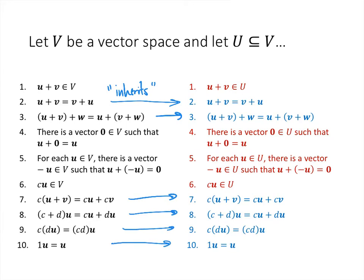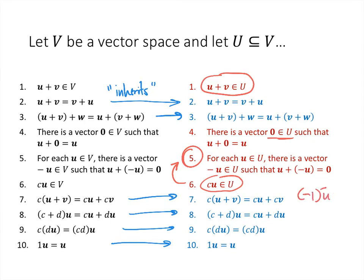But some properties aren't automatically inherited. Just because U is a subset doesn't guarantee that if we take two elements of U and add them together, that element is still in U. We're not guaranteed that the zero vector is in U, or that multiplying by a scalar keeps the result in U. However, if we have closure under scalar multiplication, then the additive inverse axiom follows, because using the scalar negative one — if negative one times u is in U, then minus u is in U. So the axioms we need to verify are axioms one, four, and six.